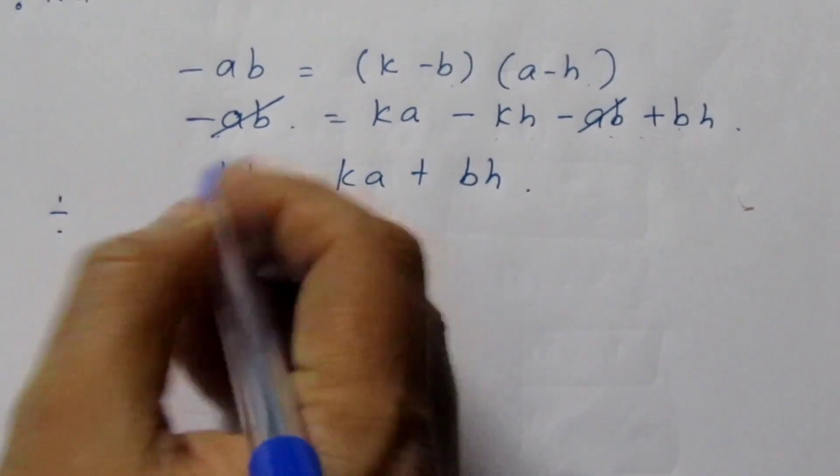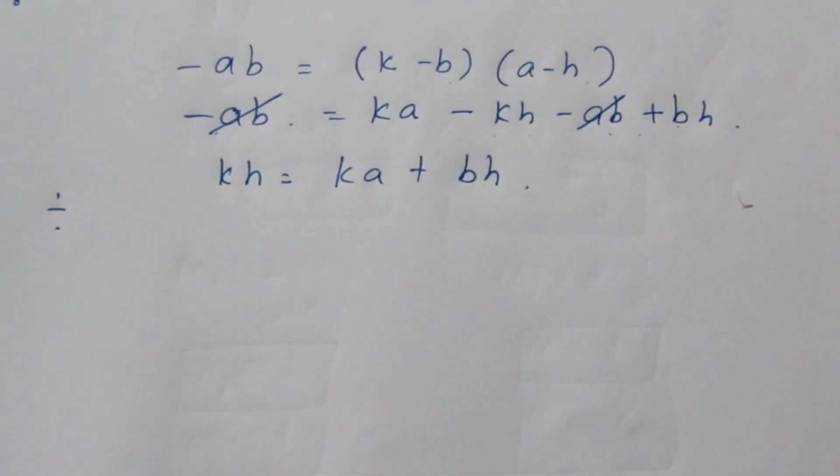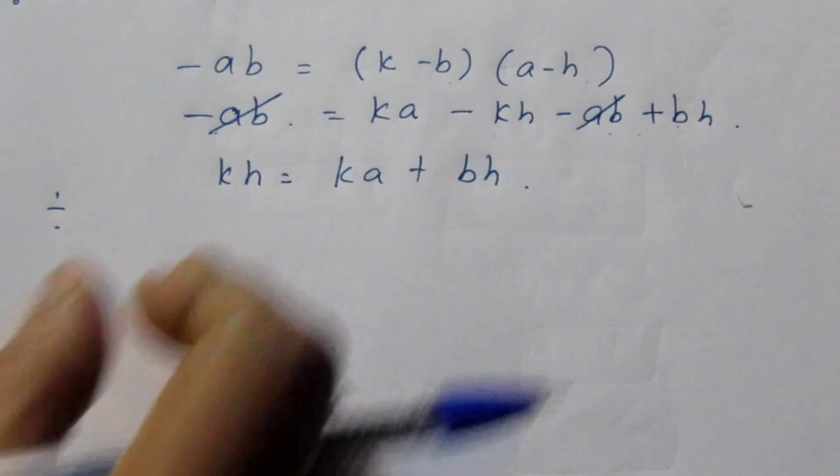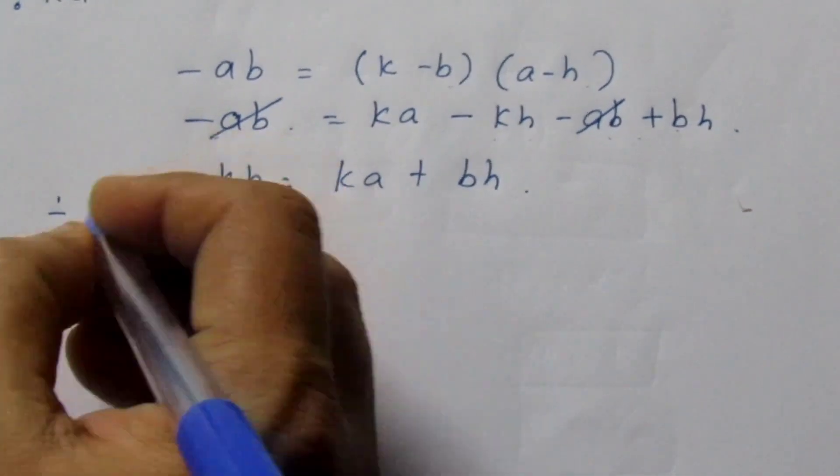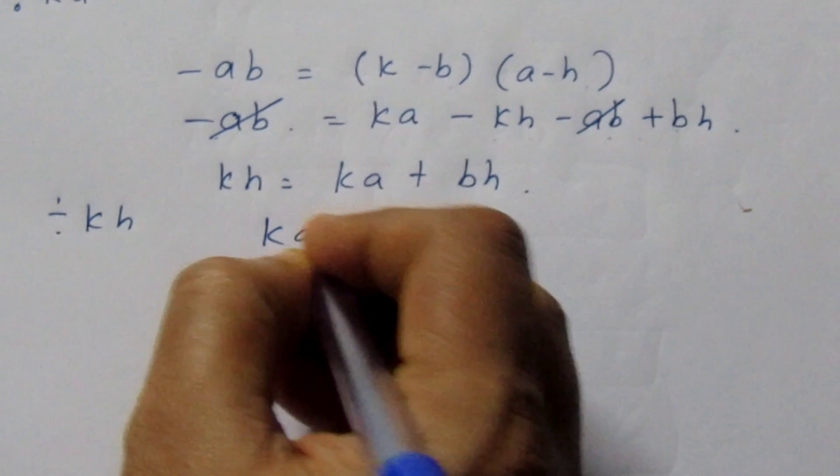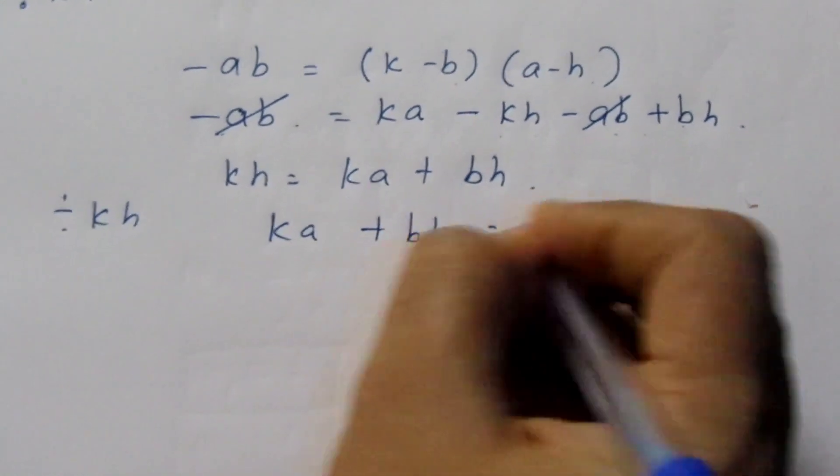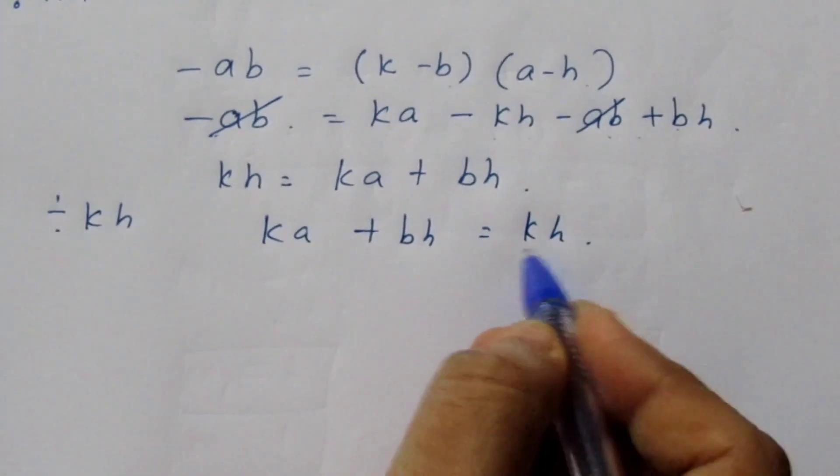I am going to divide everything by kh because in the 'to prove' we have a/h + b/k = 1. So as I want equal to 1, I am going to divide this by kh. So ka + bh = kh, right? Now dividing by kh...